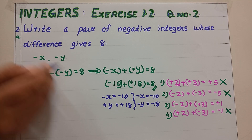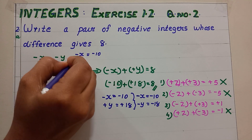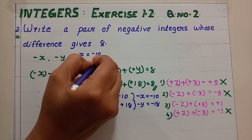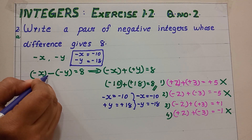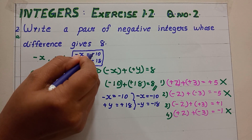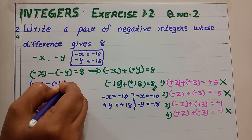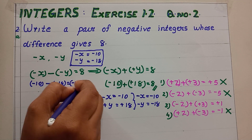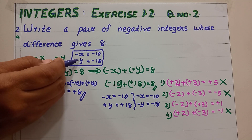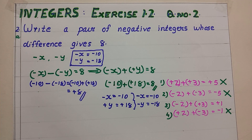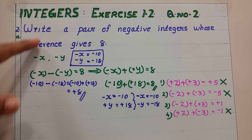We found minus x and minus y: minus x equals minus 10 and minus y equals minus 18. Substituting into the equation minus x minus minus y equals 8: minus 10 minus minus 18 equals minus 10 plus 18 equals positive 8. The equation is satisfied. So minus 10 and minus 18 are our two negative integers whose difference gives 8.